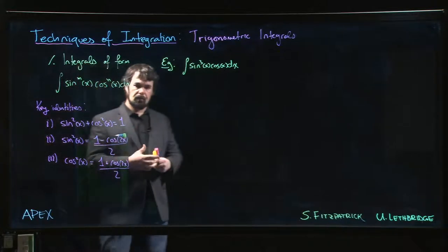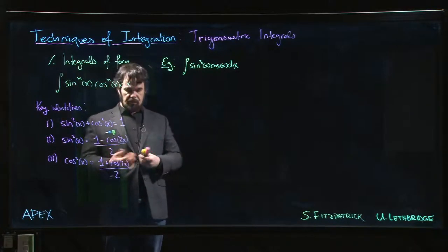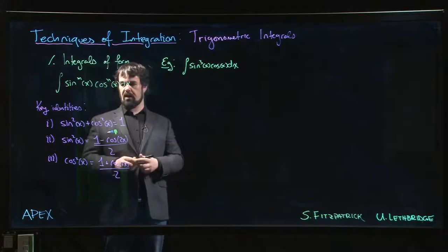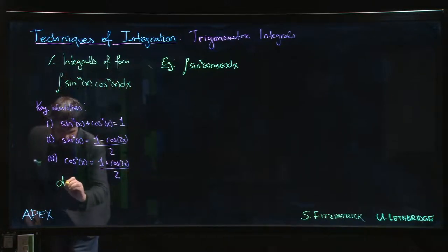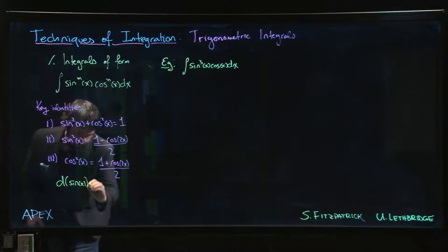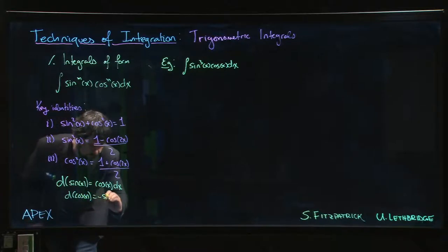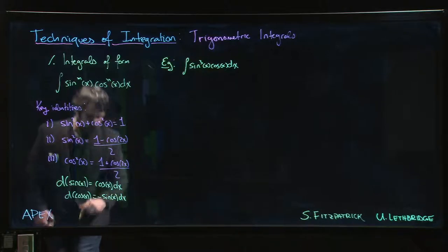But we also know that if we want to do a u substitution, we know that if we take the differential of sine, we get cos x dx, and we know that if we take the differential of cosine, we get minus sine x dx.